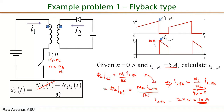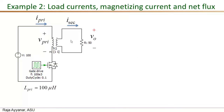This leads us to example problem two, which covers the type of converters where at any given time two or more windings can carry current simultaneously. We'll examine the implications and requirements on flux continuity under that condition. The schematic is not a standard isolated converter, but it serves as a good example to illustrate the key concepts of load current component and magnetizing current component.